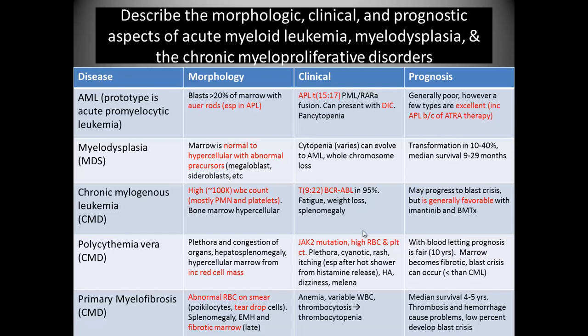With myelodysplasia, the marrow is normal to hypercellular but has abnormal precursors — like megaloblasts or ring sideroblasts. Not cancer yet, but on its way. It depends on what cell lines are involved; if it's the red cell line, they could have anemia. The cytopenia they get varies based on what's involved. These are usually whole chromosome losses. The prognosis is not so good: 10 to 40 percent transform to blast crisis, which is the category of an acute leukemia. The survival is 9 to 29 months, which is really not good when you consider we're calling this a dysplasia.